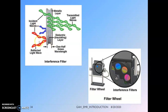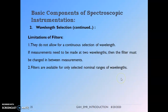The limitations of filters: they do not allow for continuous selection of wavelength. If measurements need to be made at two wavelengths, the filter must be changed between measurements. We cannot take one filter and work over a wide wavelength region — filters are available only for selected nominal ranges of wavelength and cannot be used over the entire wavelength region.